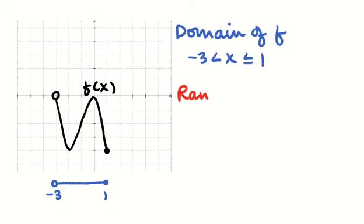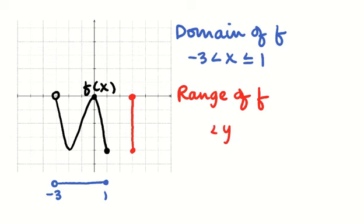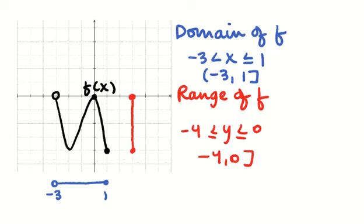For the range of f — the actual y values achieved — the graph goes all the way down to negative 4 and all the way up to 0. So the range is y between negative 4 and 0, including both. In interval notation, the domain is (-3, 1] and the range is [-4, 0].